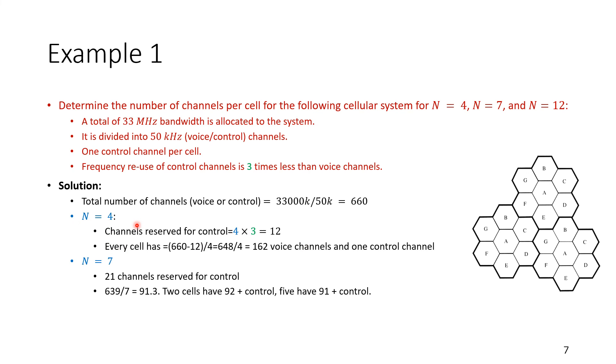For the case of N equal to four, we need four control channels. By the way, this diagram is not applicable here for the case of N equal to four. This is for the case of N equal to seven, which is coming next. The channels reserved for control would be four times three. Why are we multiplying by three? Because when we look at the entire thing, we have to account for the fact that this is less reused, and the frequency will be reused at a lower factor. So four channels times three, that's 12. However, for the voice channels, we have 660, the total number of channels minus the control channels. And that will be divided by four, which is the number of cells per cluster, which give you 162 voice channels and one control channel.